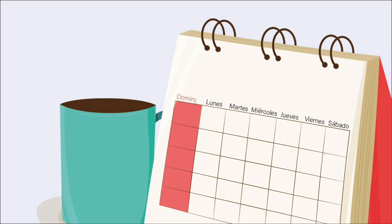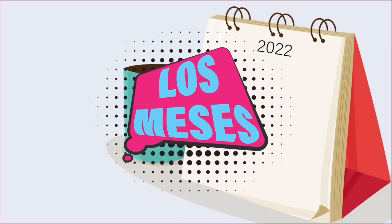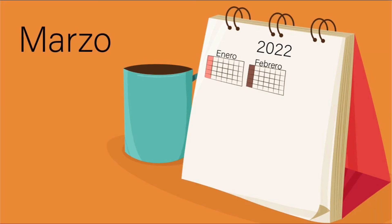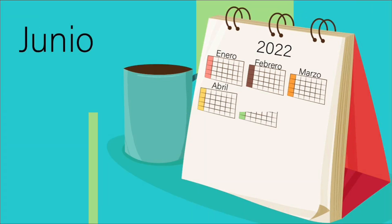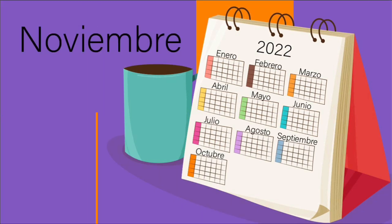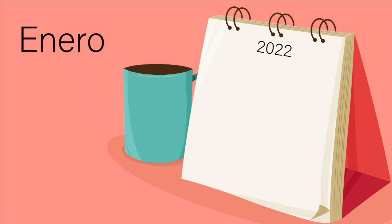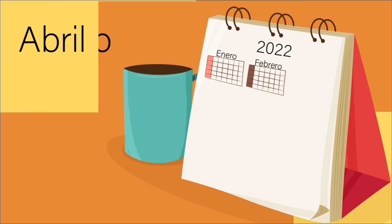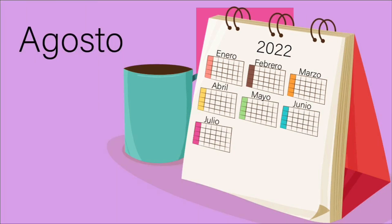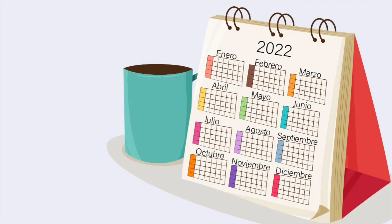Fantastic guys! Now let's see los meses del año — the months of the year: enero, febrero, marzo, abril, mayo, junio, julio, agosto, septiembre, octubre, noviembre, diciembre. Great job guys!